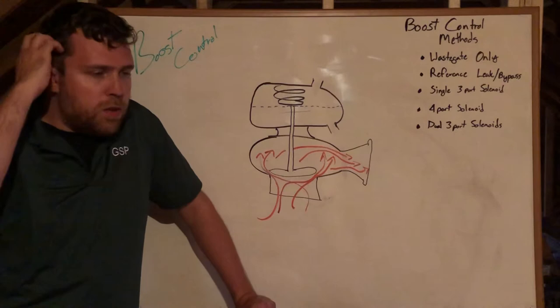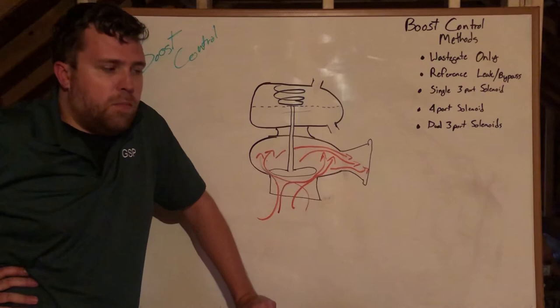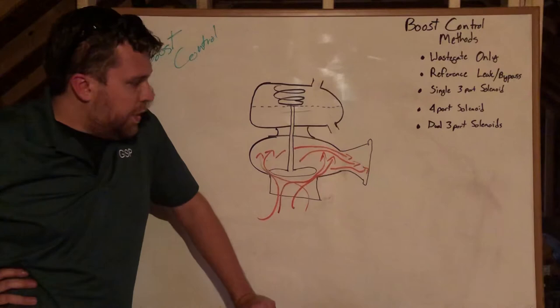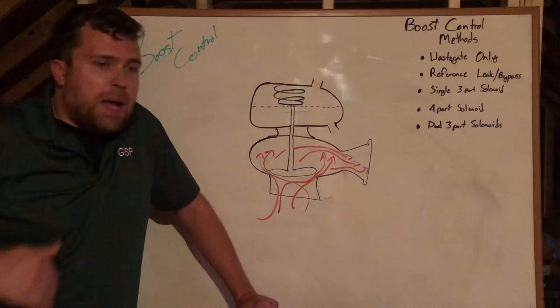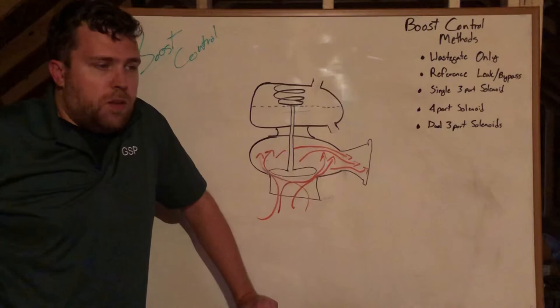The way that you control how much boost the turbo makes is by varying the speed of the turbine and compressor in order to match the current boost level that you want for a given engine speed and in some cases throttle angle. The way you slow a turbo down is by bypassing excess exhaust gas around the turbo so that it exits to atmosphere and doesn't speed up the compressor wheel.